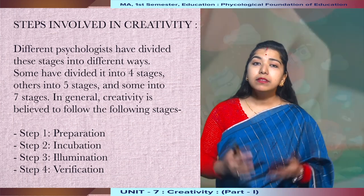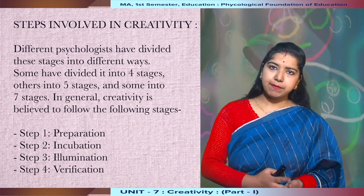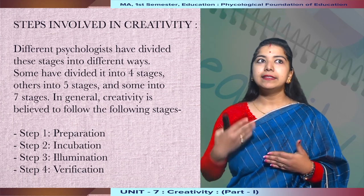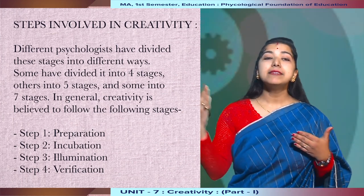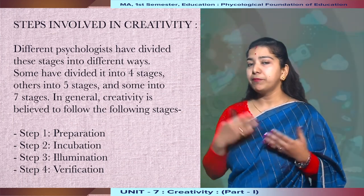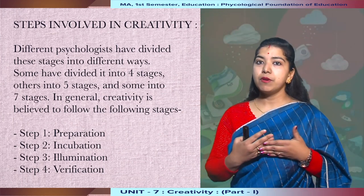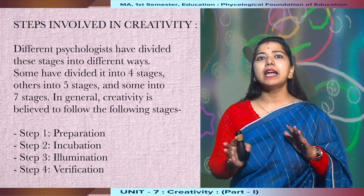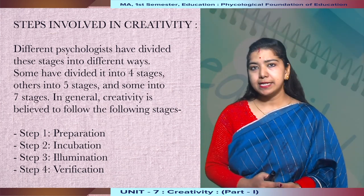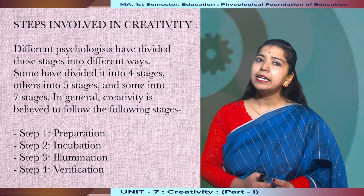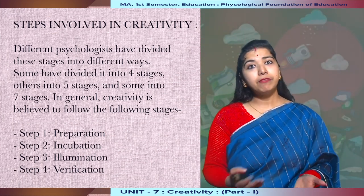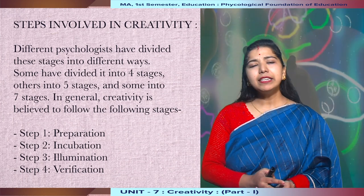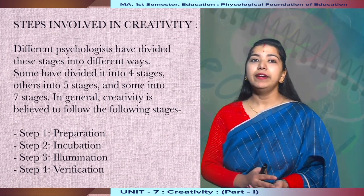Now we will discuss the steps in creativity. When a creative person creates something new, it's not like they just created it recently — it has a process. They have to go through a long process and follow some procedures. It may be individual, but psychologists have divided it in some ways. Some have divided it into four stages, some into five, and some into seven. It differs from psychologist to psychologist, but in general, creativity is believed to follow the following stages.